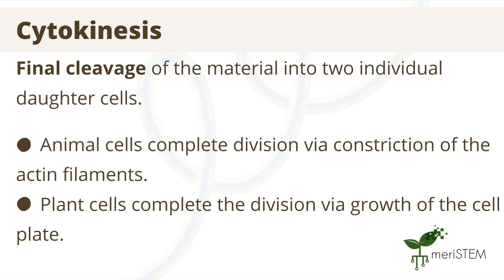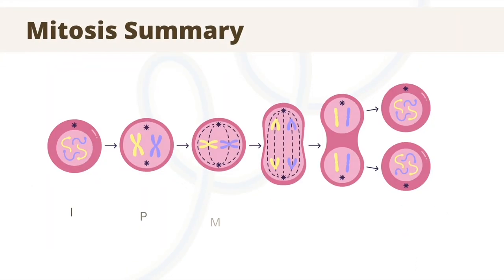For some extra information, this complete division is facilitated by the constriction of actin filaments in animals, but by the growth of a cell plate in plants. So this is what the overall process looks like with the interphase, prophase, metaphase, anaphase, telophase, and cytokinesis. Note that this process starts off with one cell and ends with two diploid cells, which are identical to the original one.